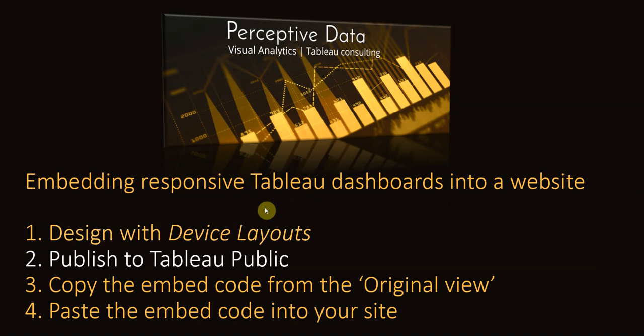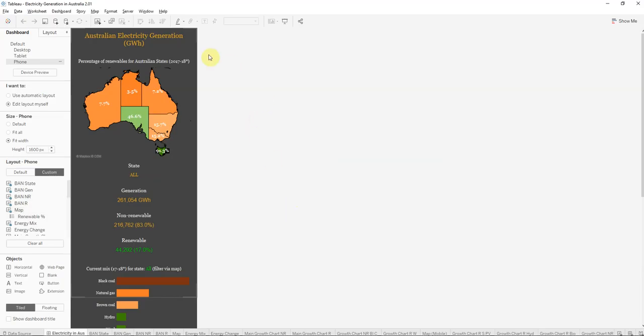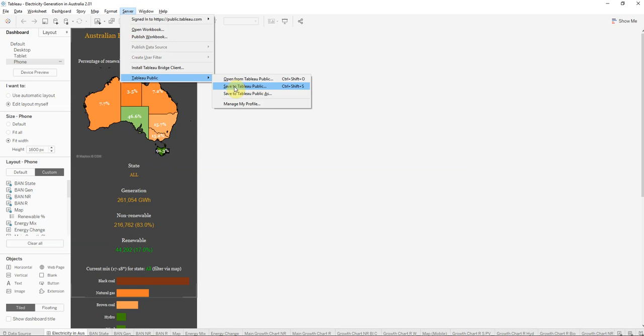Our second step is to publish to Tableau Public. I'm going to assume you're already familiar with Tableau Public and its features. You'll need a free account if you haven't got one in order to publish, and you'll need to ensure you're not publishing any confidential information — it's not the best spot for your sales strategy dashboard, after all it is called Public for a reason. To publish, go up to Server, then Tableau Public, and save to Tableau Public. If you haven't already logged in, it will prompt you for those credentials.